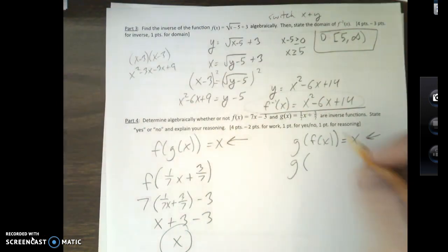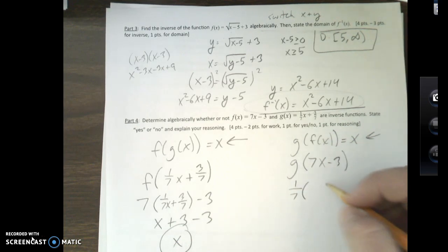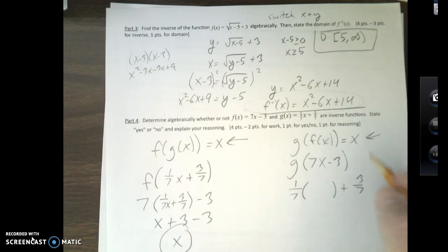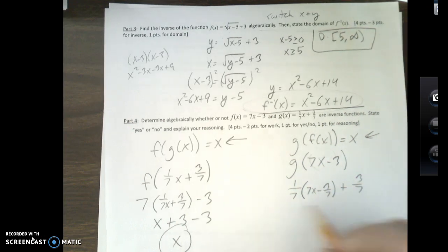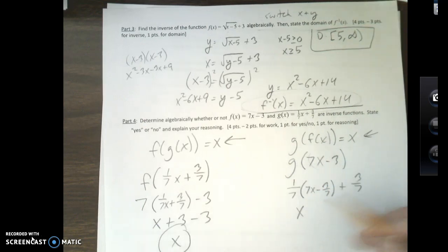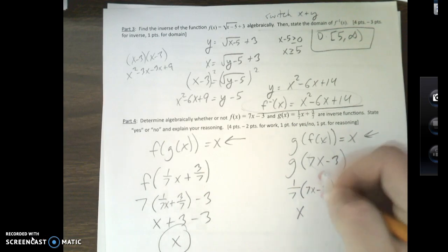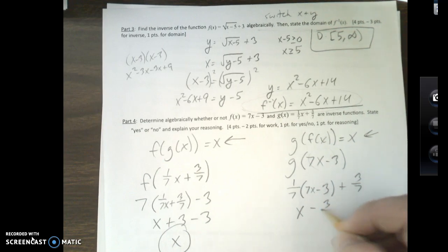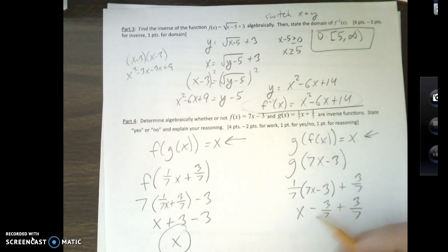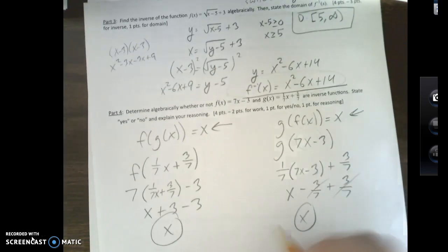Over here, g. My f of x is 7x minus 3. My g function is 1/7 times something plus 3/7. I'm putting this in for the something. Okay. Well, 7x times 1/7 gives me just x. This will give me... Okay. If I do this... Oh, I jumped ahead of myself. I'm so sorry. I'm sorry. Thank you. I was like, oh no, this isn't going to work. There we go. There we go. So 1/7 times negative 3 is negative 3/7. There we go. They cancel out. Okay. So what we're going to write is